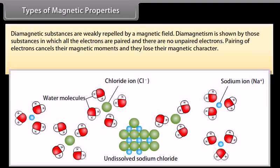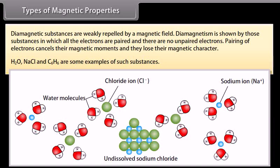Diamagnetic substances are weakly repelled by a magnetic field. Diamagnetism is shown by those substances in which all the electrons are paired and there are no unpaired electrons. Pairing of electrons cancels their magnetic moments and they lose their magnetic character. H2O, NaCl, and C6H6 are some examples of such substances.